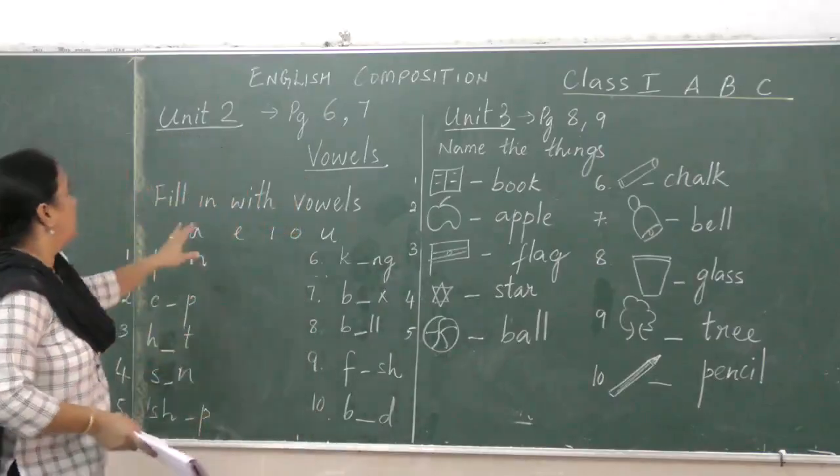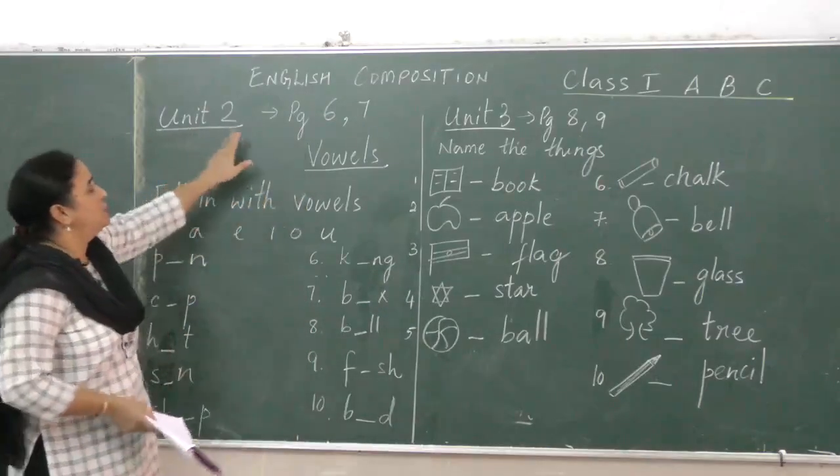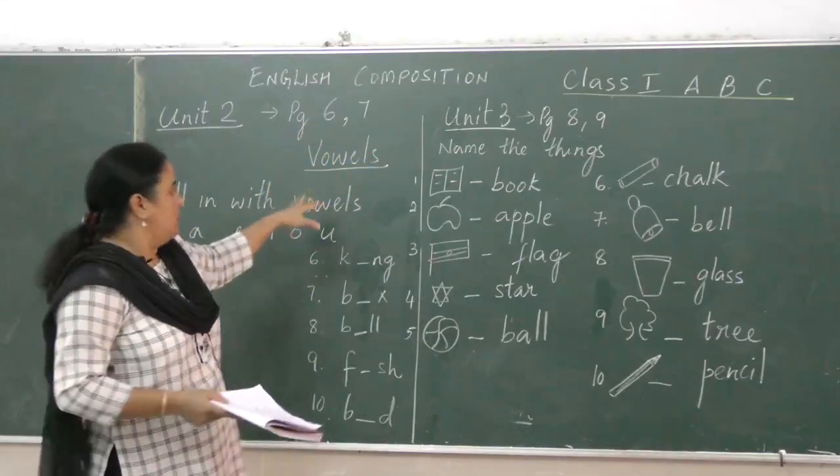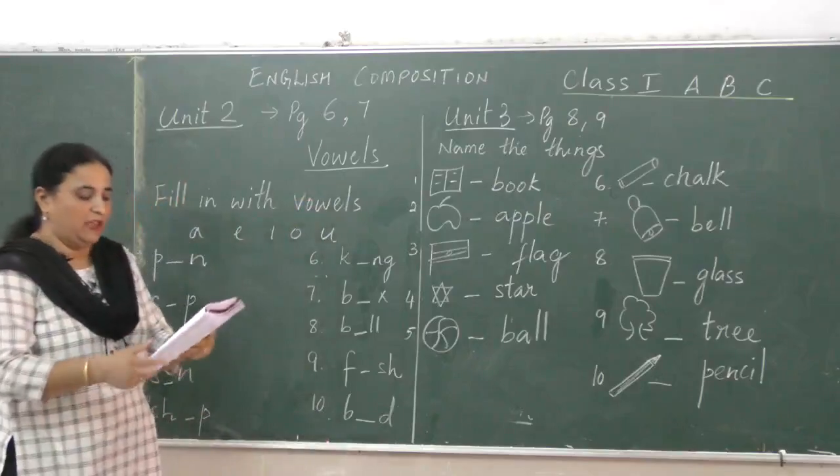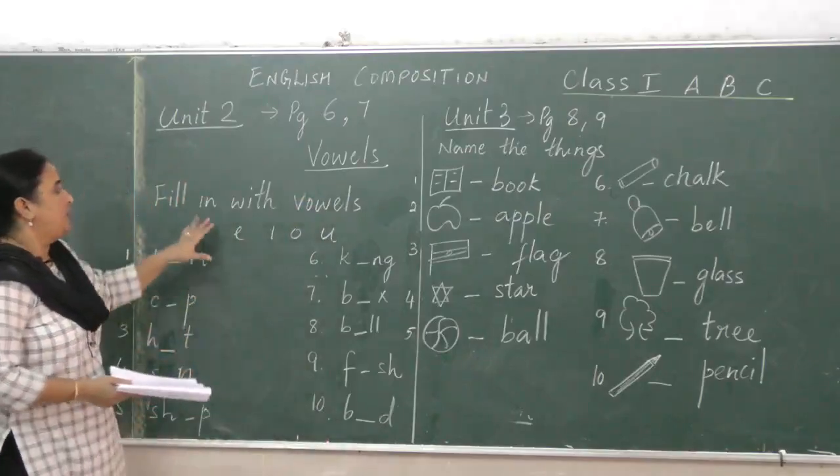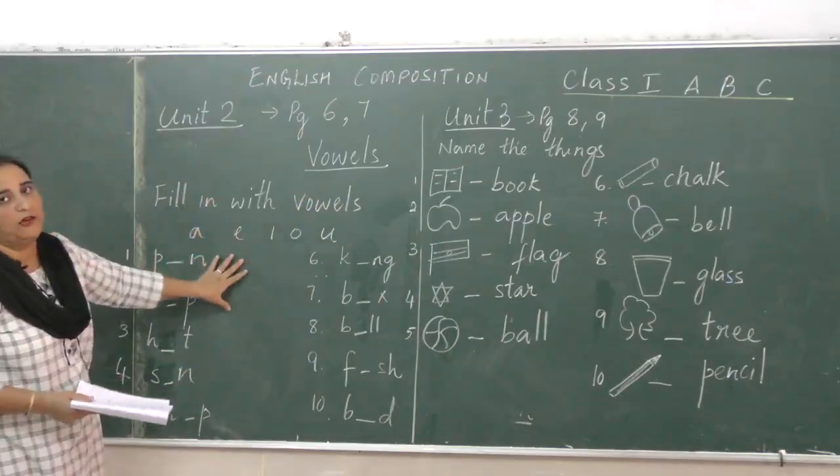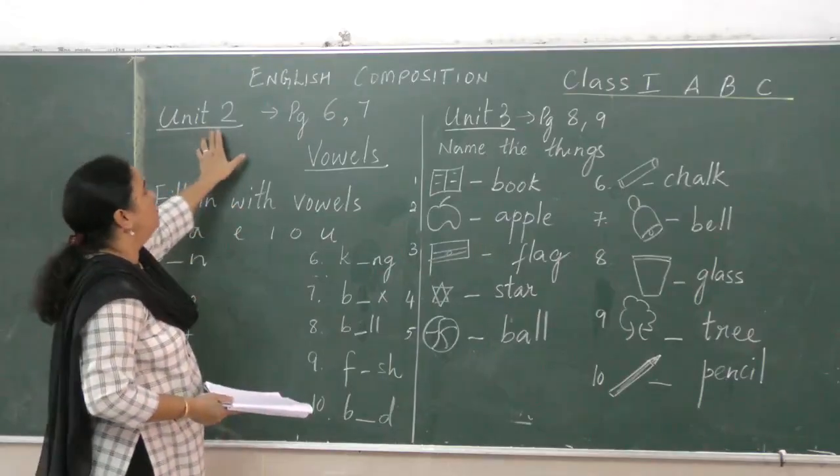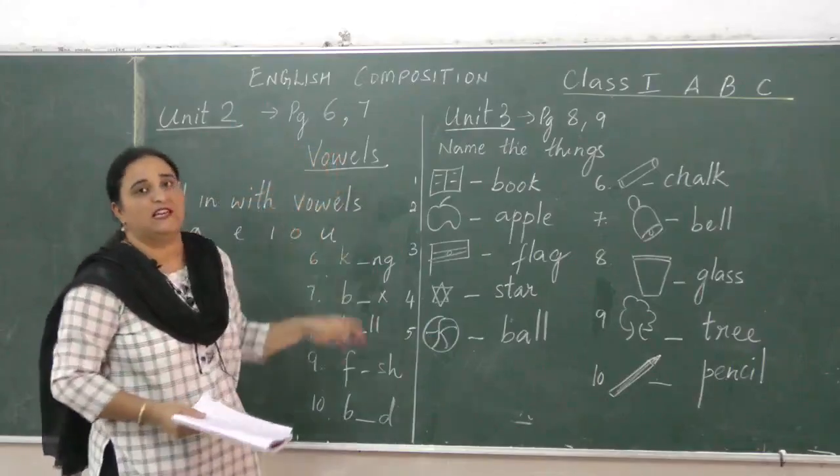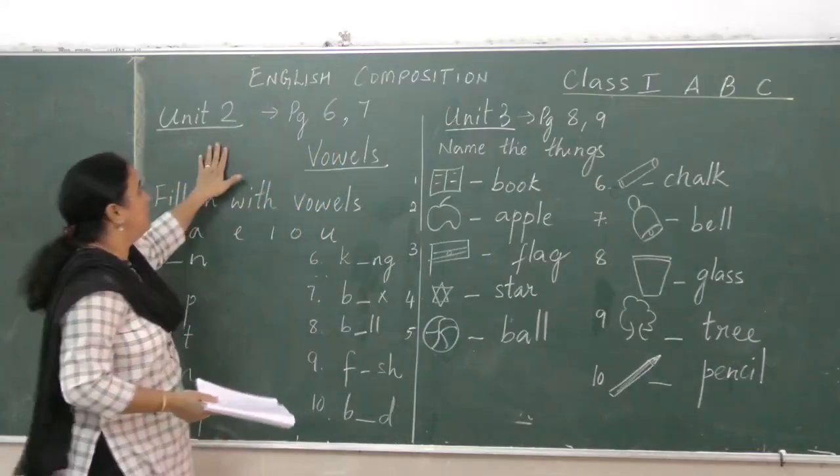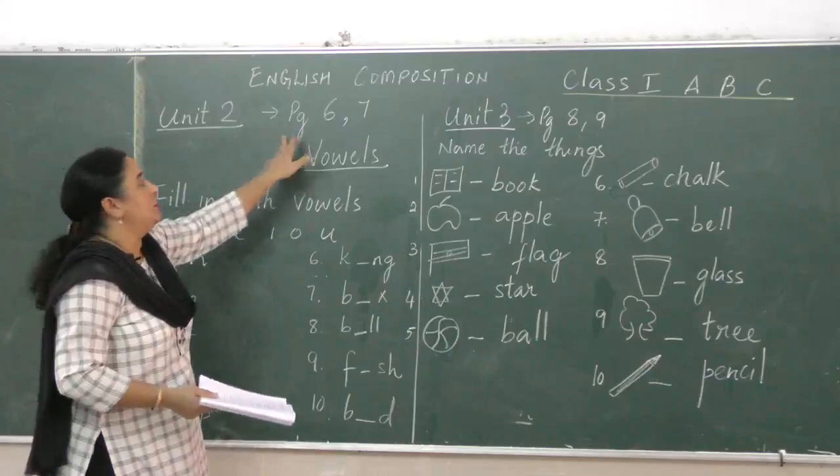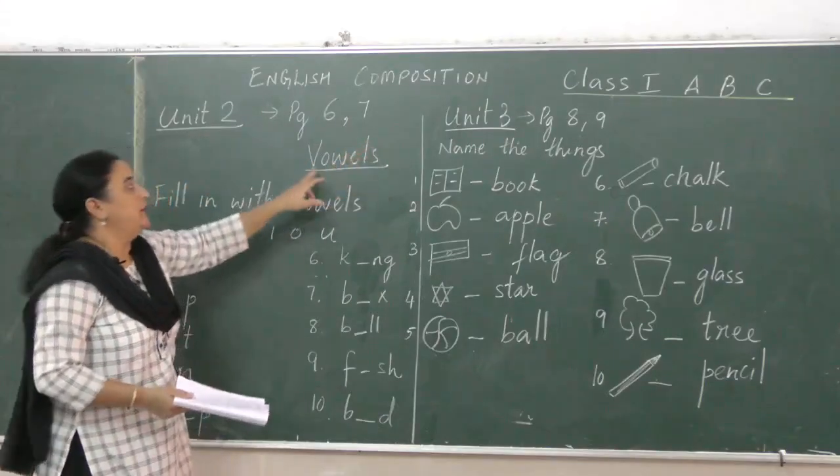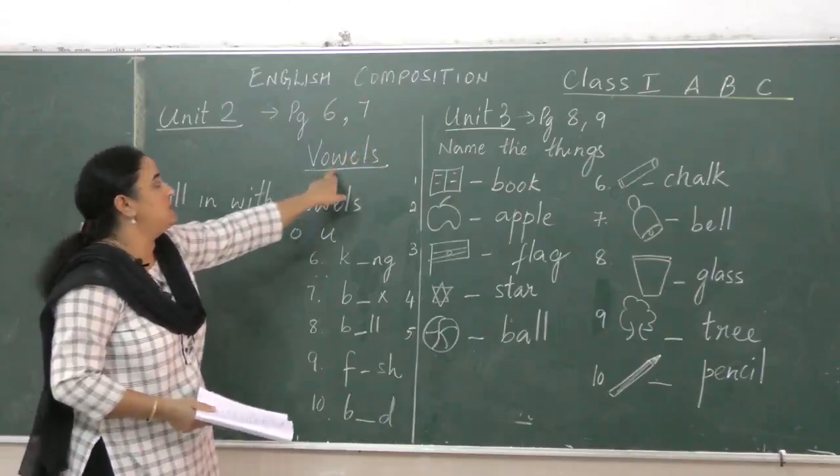Now coming to the topic, I have given over here Unit 2, page 6 and 7. I have taken out 10 words from page 6 and 7, and you have to write this in your copy again. You write the way I have written: Unit 2, you take a fresh page after you have finished the alphabets. You write page, you write Unit 2, page 6 and 7, and you write the topic. The topic is vowels.